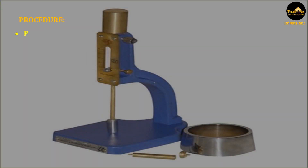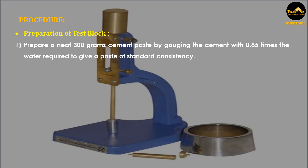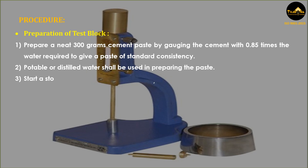Procedure — Preparation of test block: Prepare a neat 300 gram cement paste by gauging the cement with 0.85 times the water required to give a paste of standard consistency. Potable or distilled water shall be used in preparing the paste. Start a stopwatch at the instant when water is added to the cement.